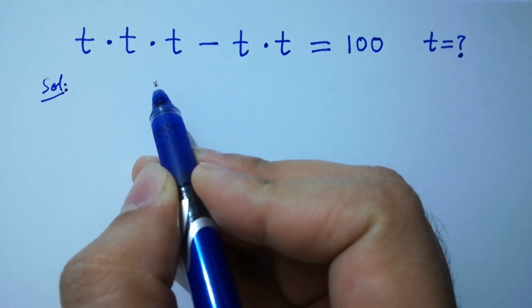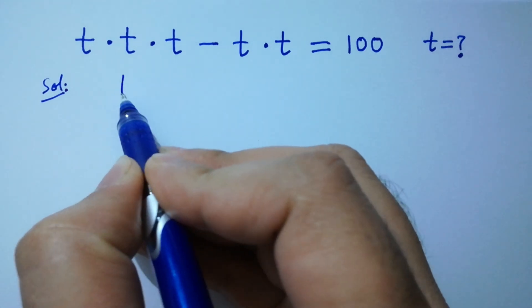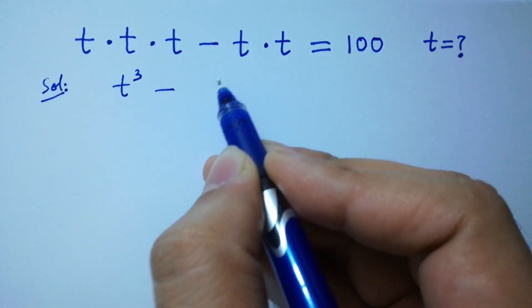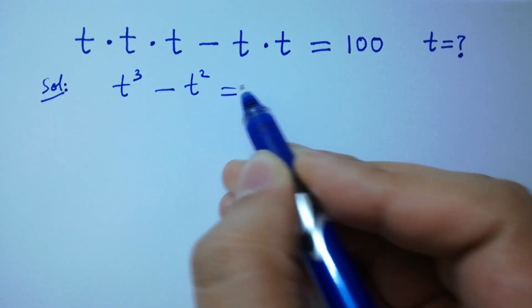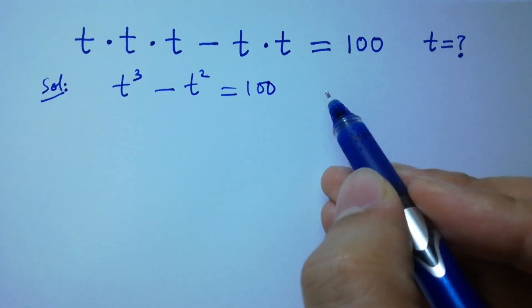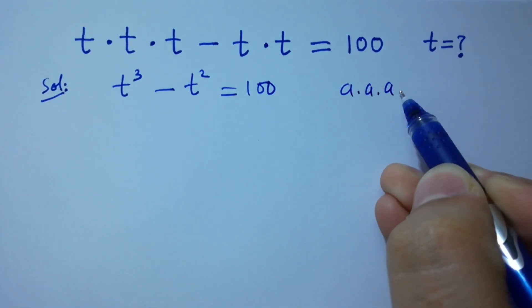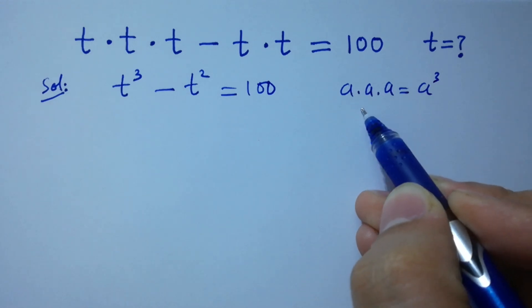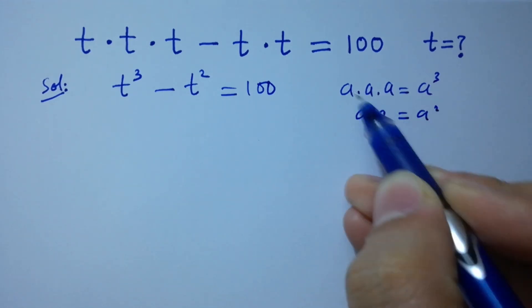This question is the same as t cubed minus t squared equals 100, since a times a times a equals a cubed and a times a equals a squared.